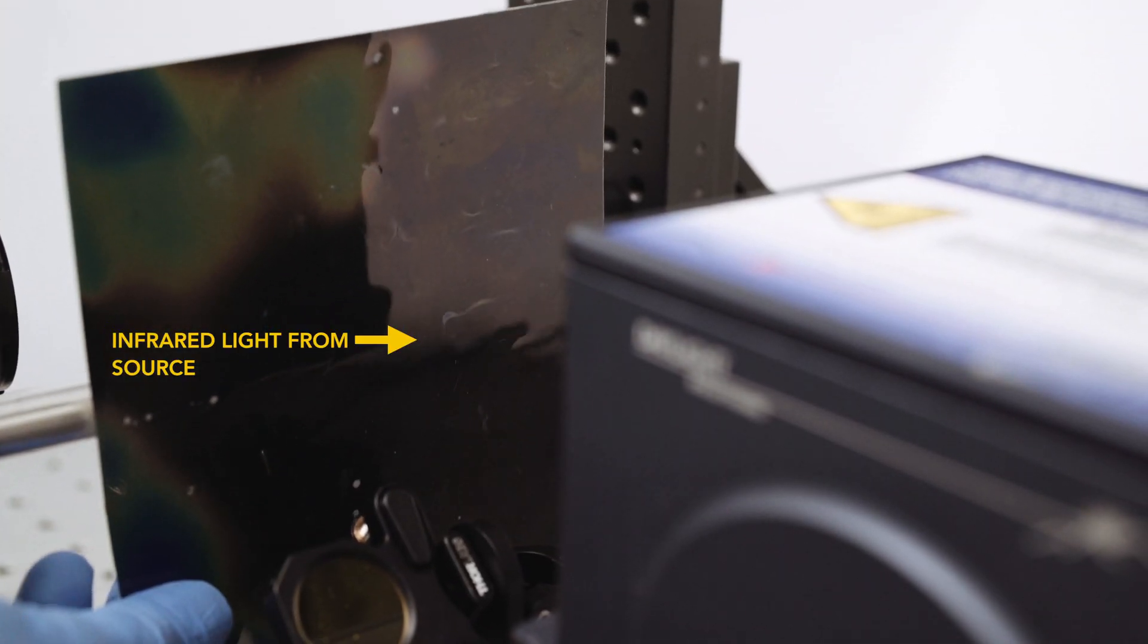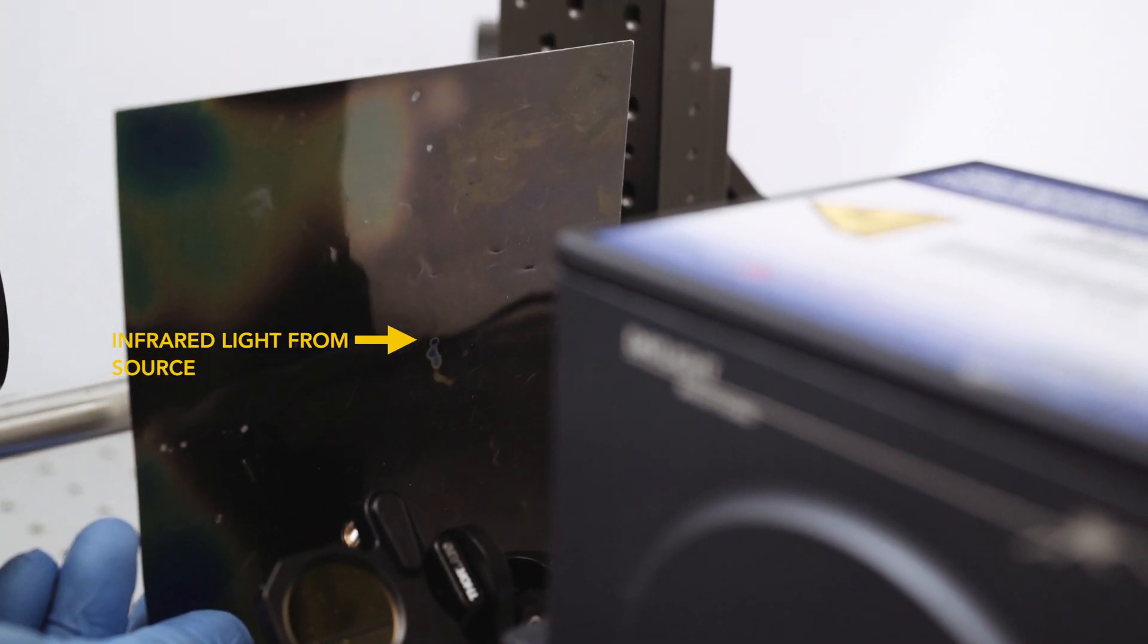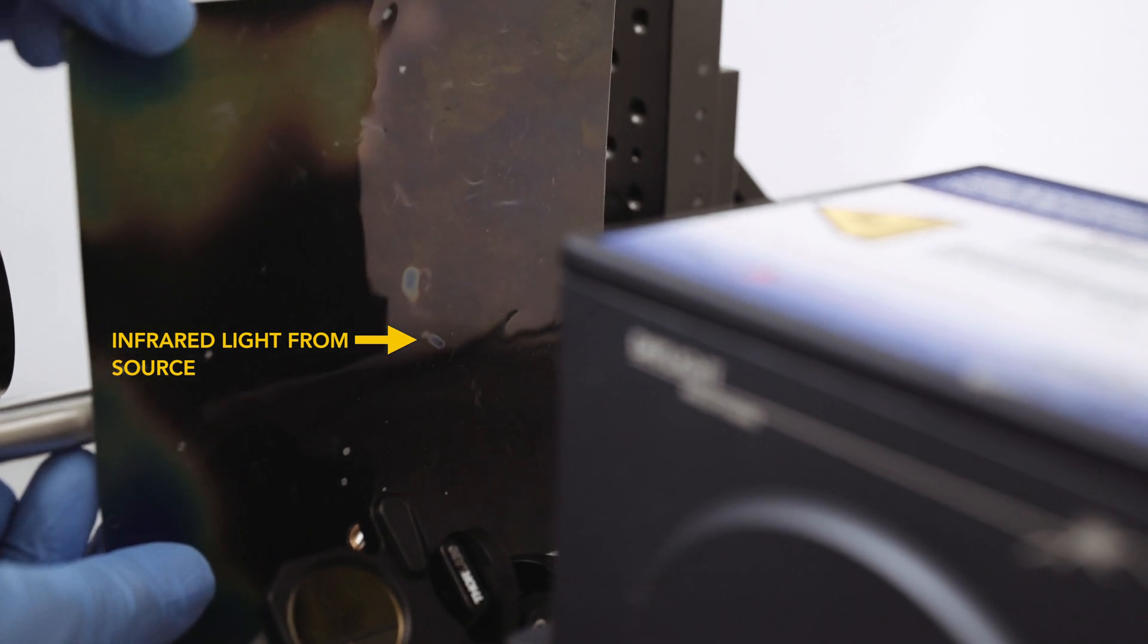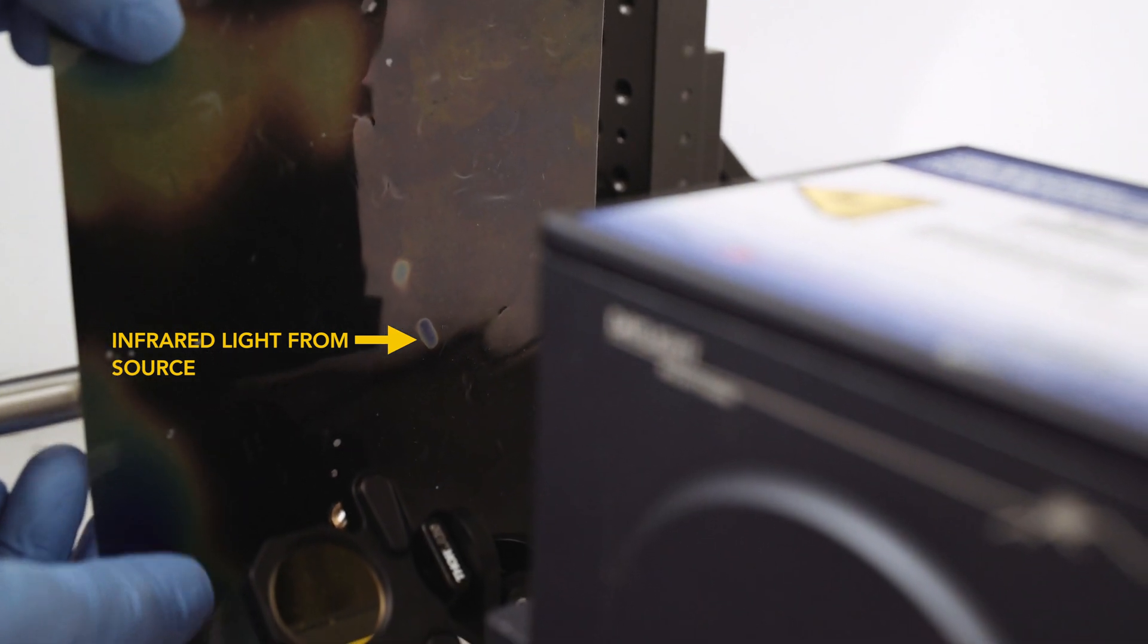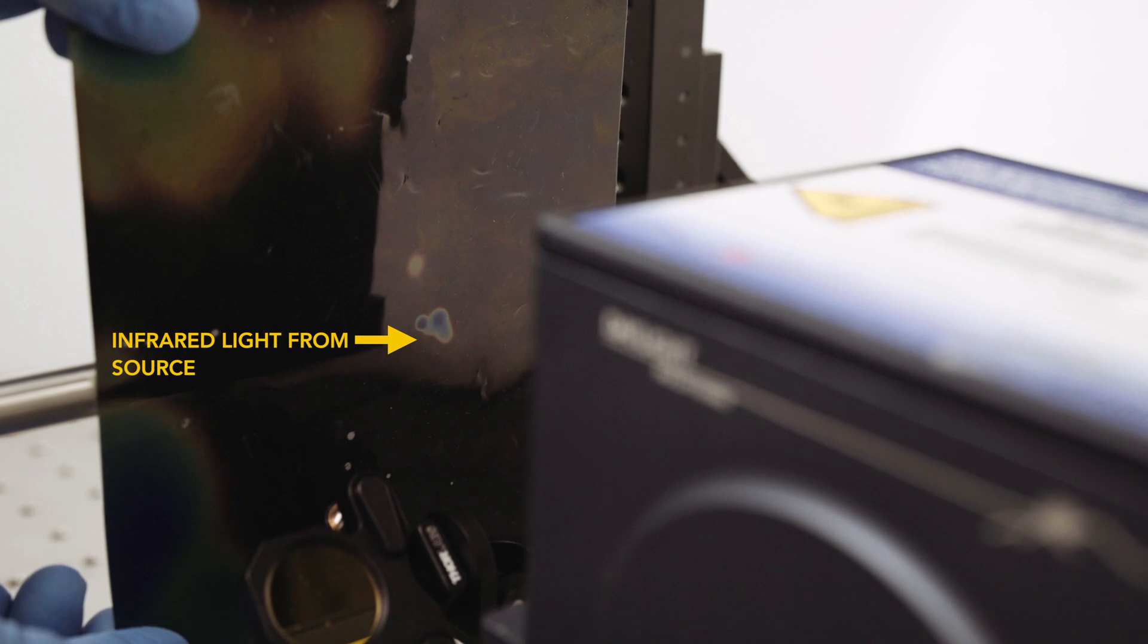As of now, their flat lens works in the infrared part of the spectrum, but the researchers say it could be modified to capture images using visible light as well.